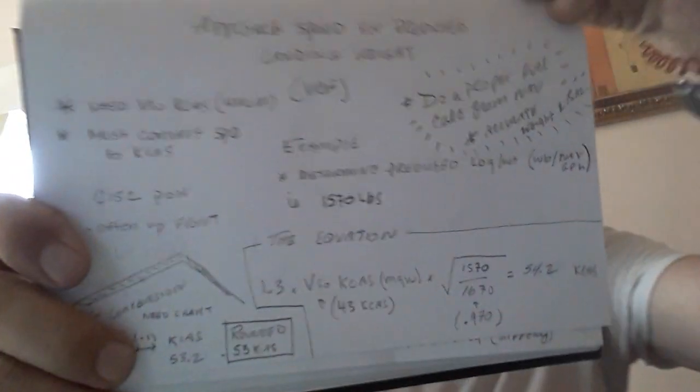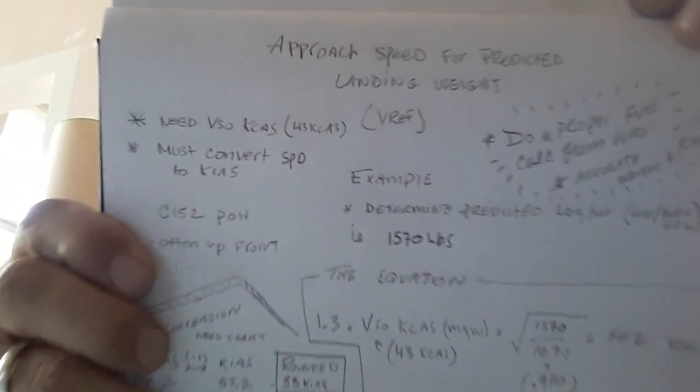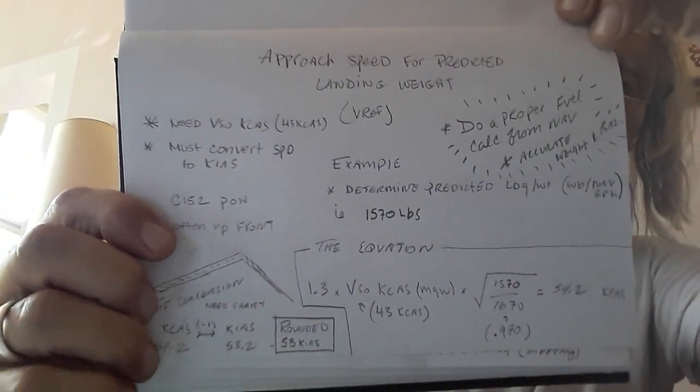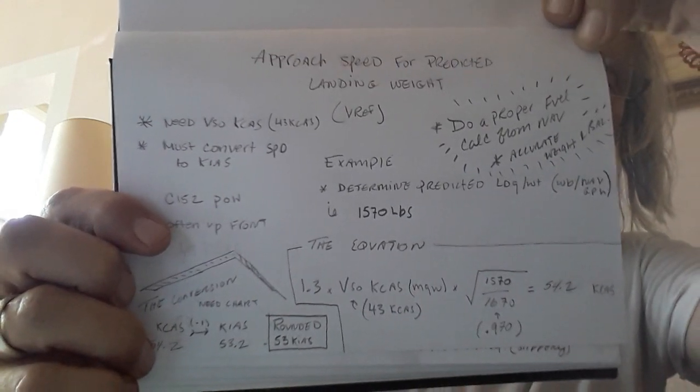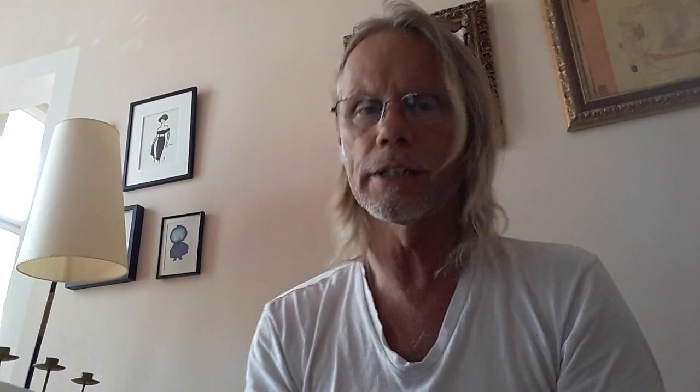I'll put this guide in the comments of my post so you can have a look at it. I hope that's helpful and clears up any confusion. For C172 drivers, all the same information is available in the C172 POHs — the numbers will just be different. That's it: approach speed for predicted landing weight.